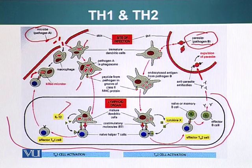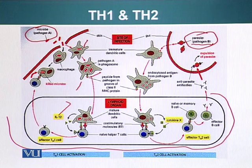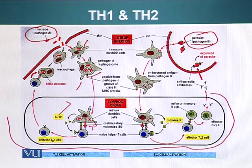When the dendritic cell encounters the naive, undifferentiated helper T cell, it is going to stimulate it. When antigen presenting cells mature, they start expressing the co-stimulatory molecule called B7, which you can see right here. These are the two signals helper T cells require to become activated: the B7 molecule and the foreign antigen in association with the MHC class 2 molecule.